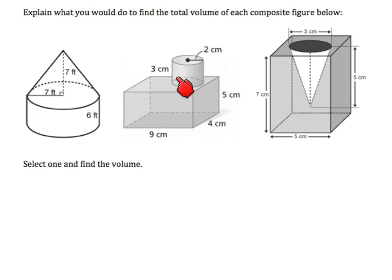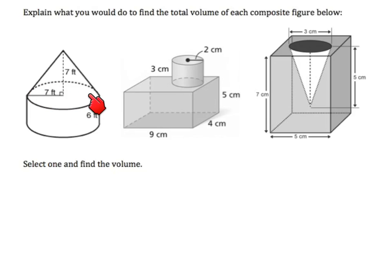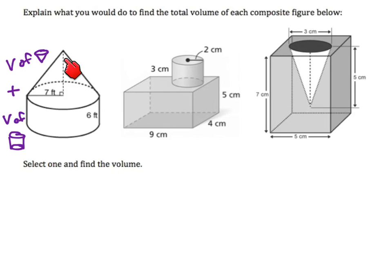To figure out the composite volume of this figure, we have to think about what we see. We see a cone and we see a cylinder. What we need to do is figure out the volume of the cone, figure out the volume of the cylinder, and add them together. That gives us the volume of the whole shape.